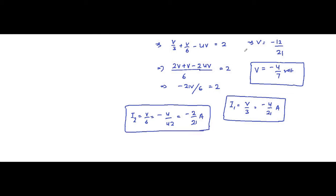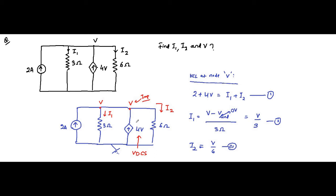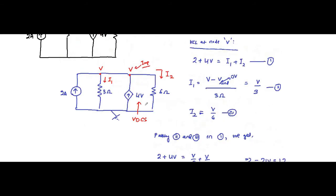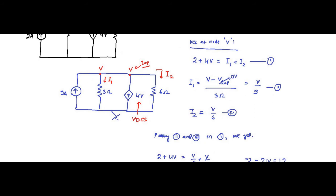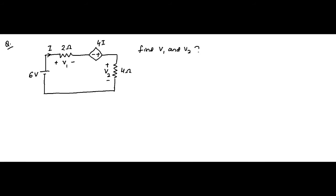So we have obtained all the parameters that were asked: the node voltage V, then i1, then i2. This is a simple circuit — you just need a good understanding of Kirchhoff's current law. All you need to do is establish relationships between the parameters in the question, bring everything in terms of one variable. We brought all equations in terms of V, found the node voltage, and then found i1 and i2.